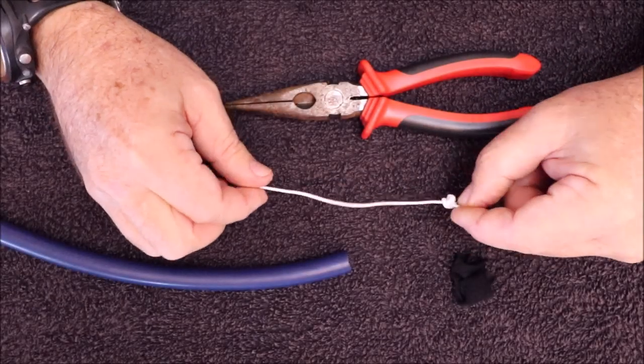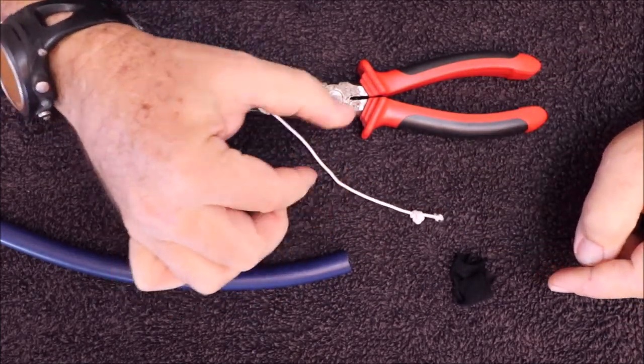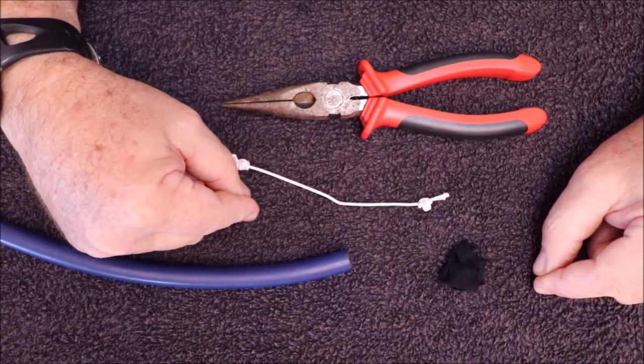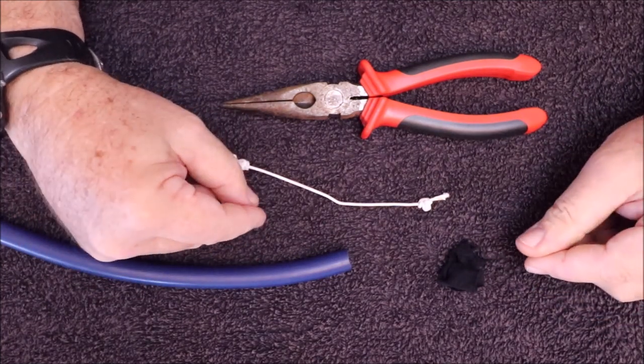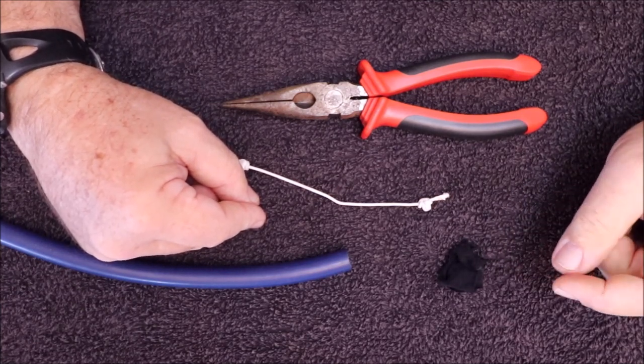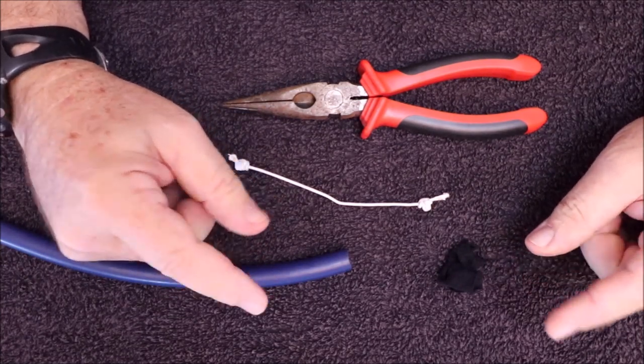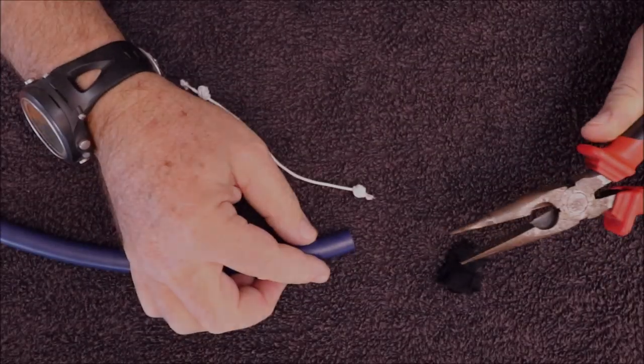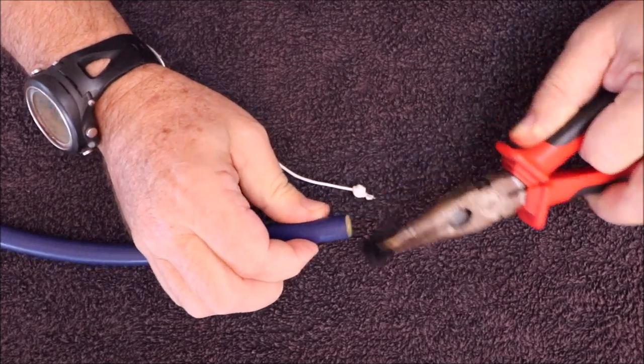I have now cut the tag ends and I'm going to lubricate them to get them into the rubber. I've soaked a small piece of rag with silicone. You can use a small sponge, you can also use dishwashing liquid, but try not to use any petroleum products like grease, Vaseline, or Q20 spray—any of those can damage the latex.